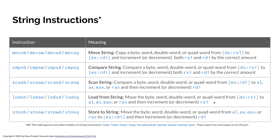Load from string moves a byte, word, double word, or quad word from the string pointed to by RSI into AL, AX, EAX, or RAX based on the size of data, and increments or decrements RSI. Store to string does the opposite — it moves the byte, word, double word, or quad word from AL, AX, EAX, or RAX to RDI and increments or decrements RDI. The number of times these things happen is controlled by RCX. So I can move a string, compare a string, load from a string, store a string, and scan a string — where I'm scanning across a string looking for some specific entry.